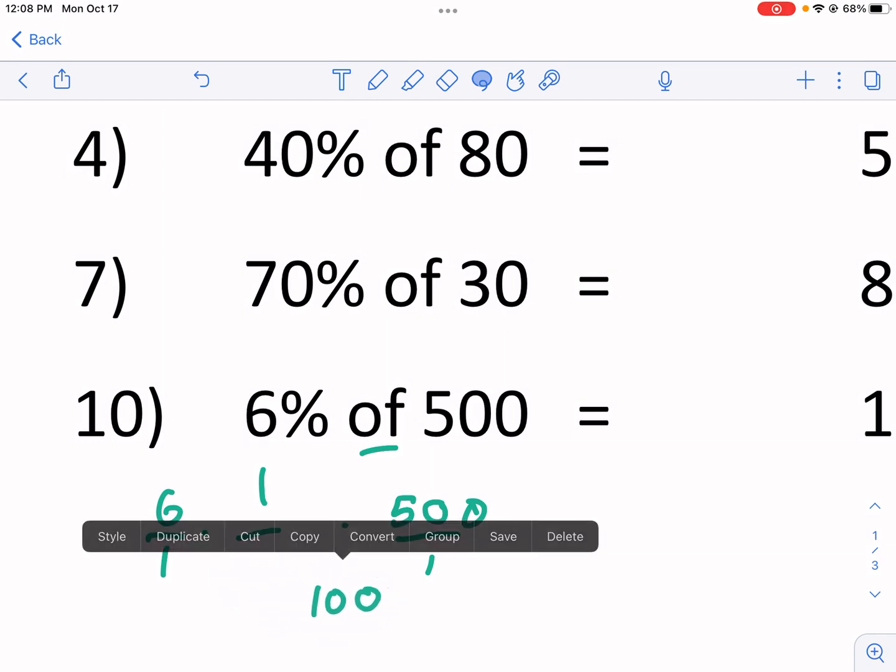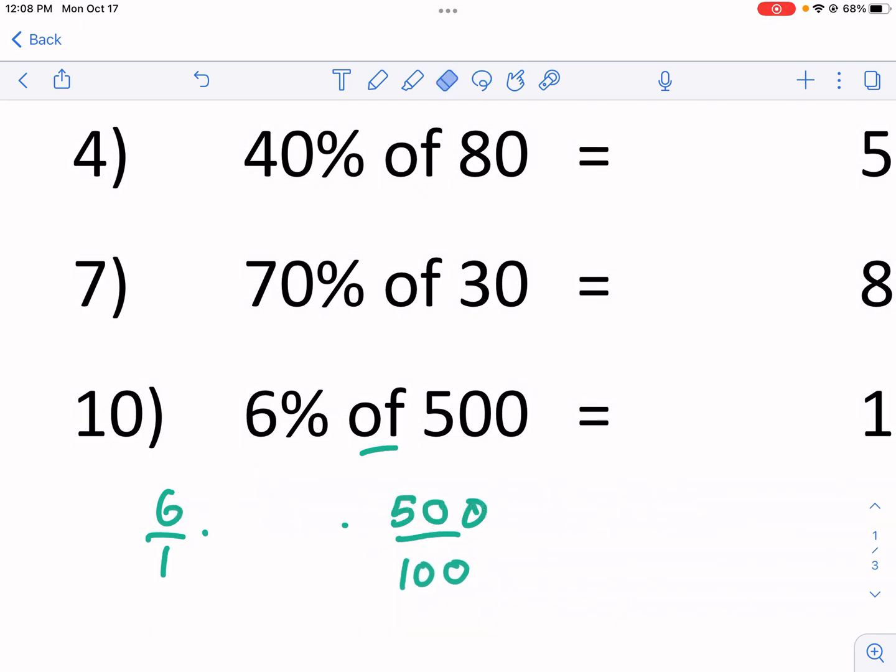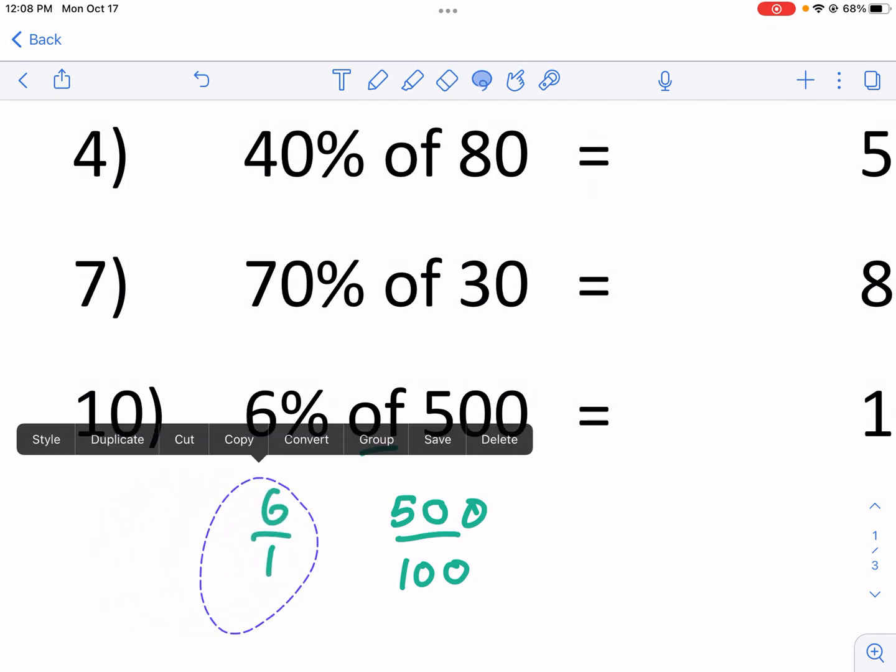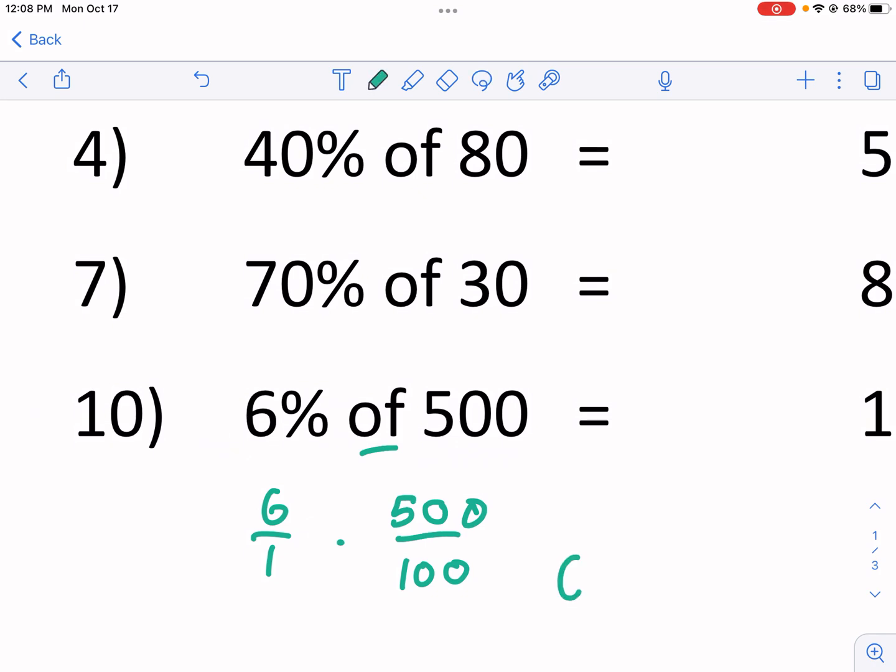So what do I mean by that? This is the mathematical reason, but the trick is a little bit more simple to say. So if I move this 500 over and then move this one over, that just goes away. And now I have 6 times 500 over 100, which becomes 6 times 5, which is just 30.